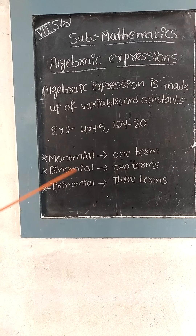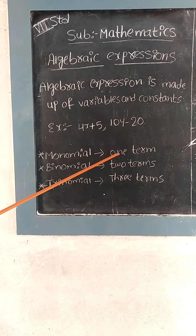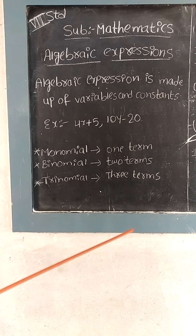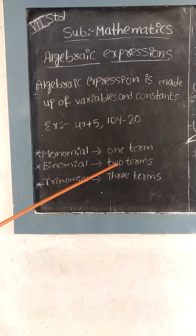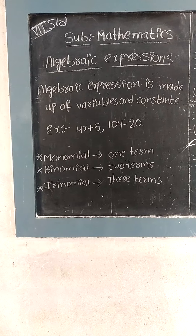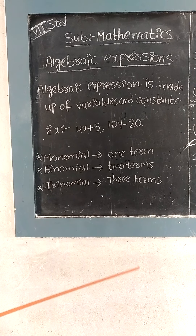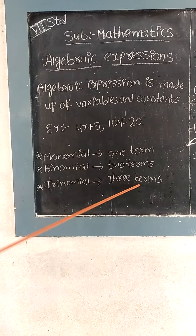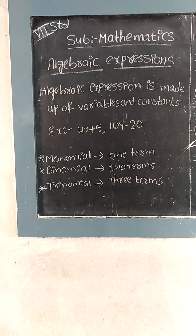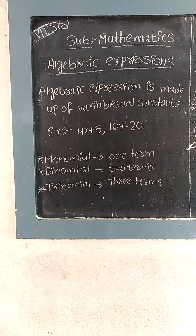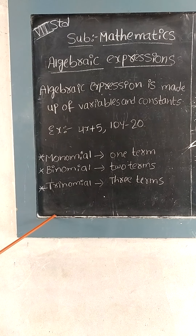What do you mean by monomial, binomial, and trinomial? If the expression consists of one term then it is called a monomial. If the expression consists of two terms then we call it a binomial. If the expression is made up of three terms then we call it a trinomial. And if the expression has more than three terms then we call them polynomials.